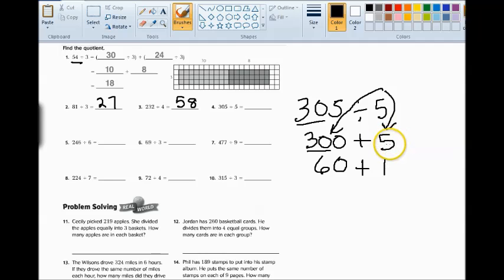35 divided by 35 is 1. So now we have to add those two together. So 305 divided by 5 is 61.